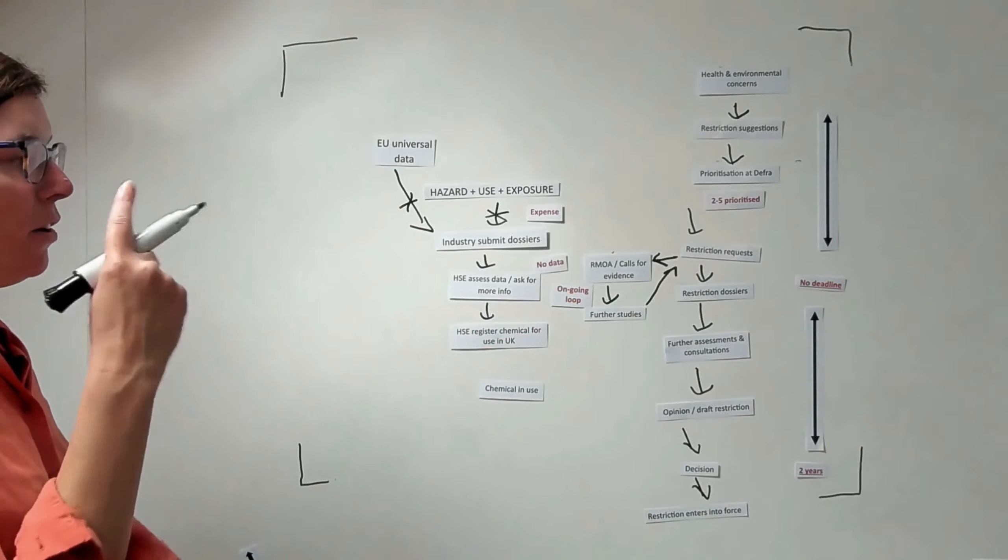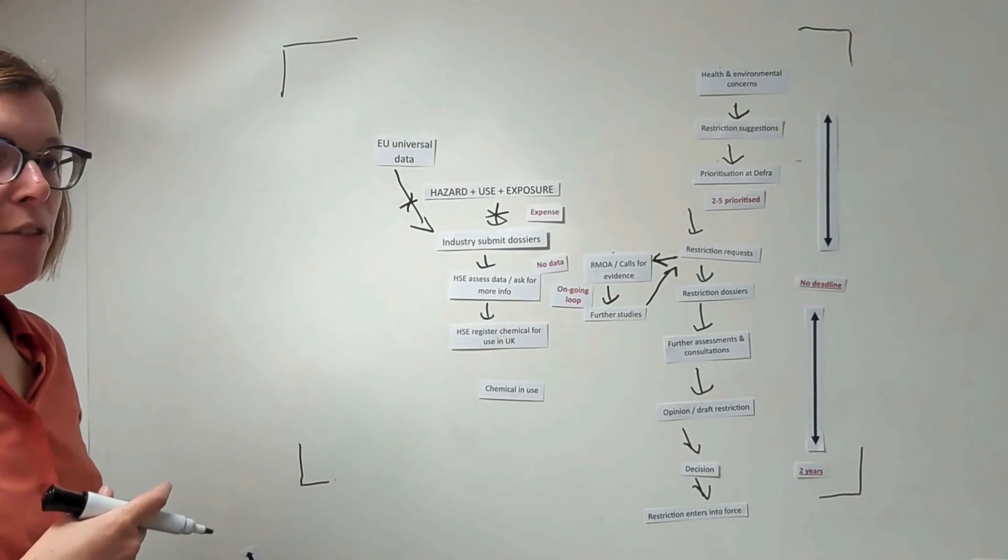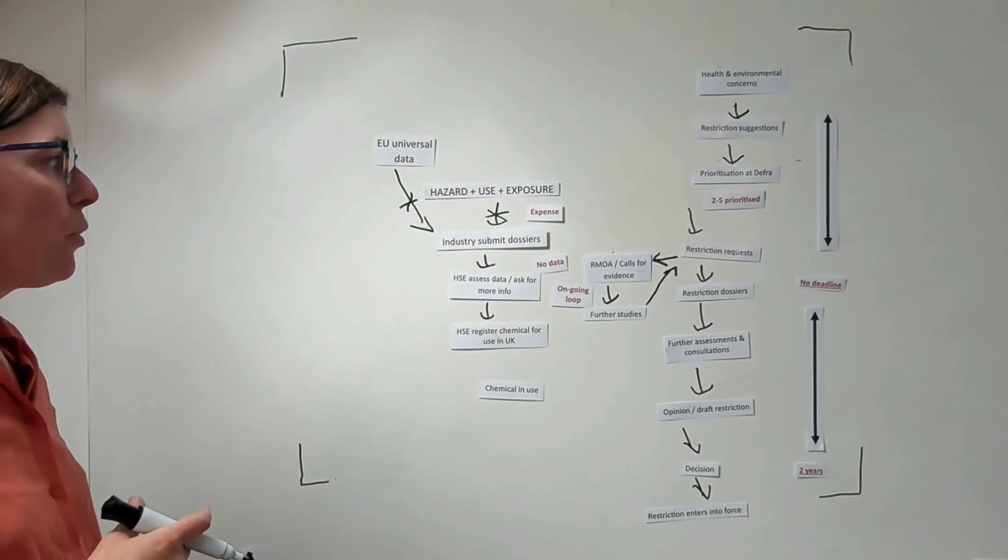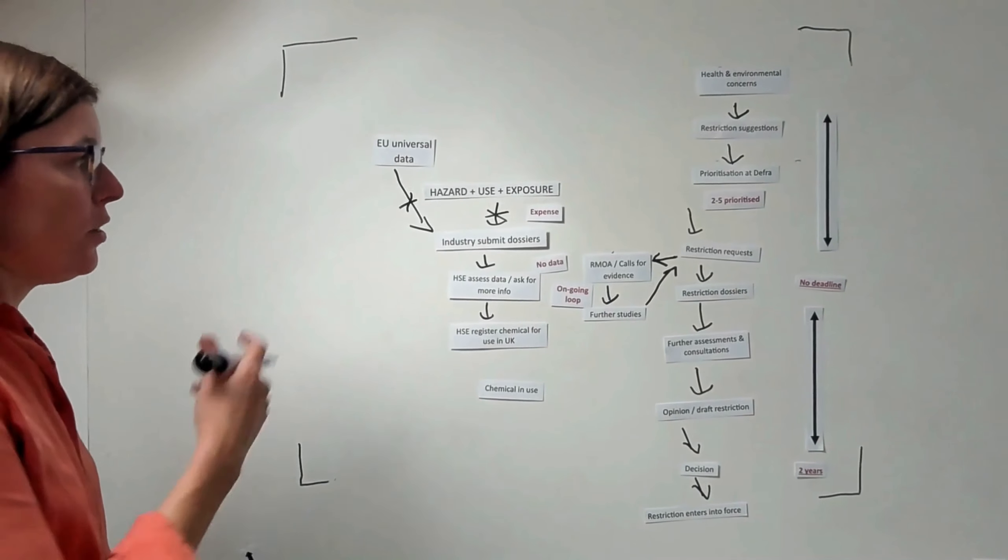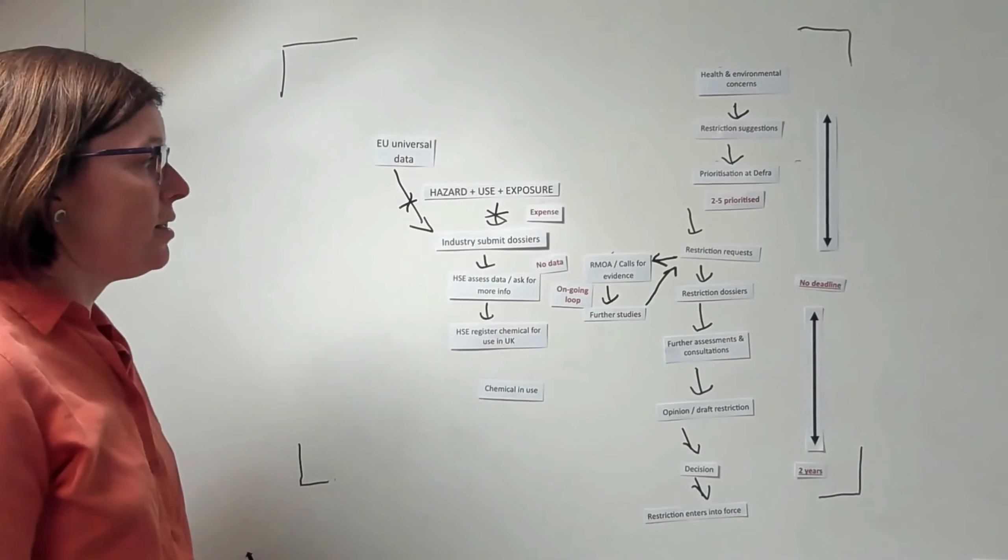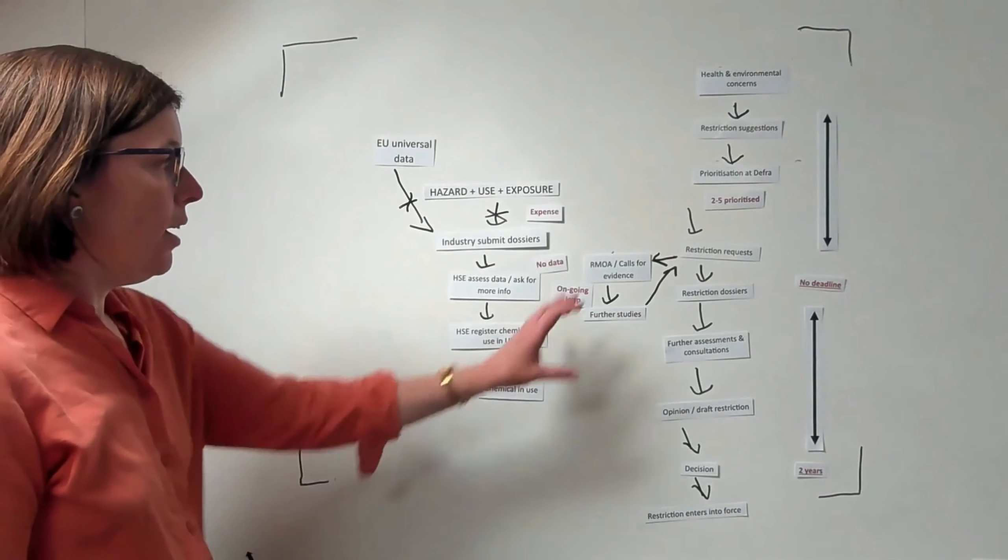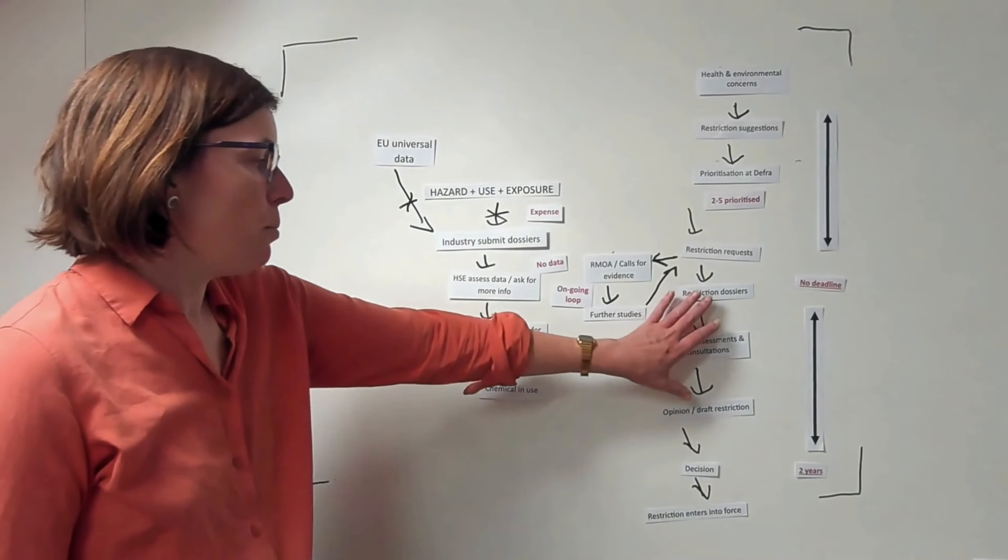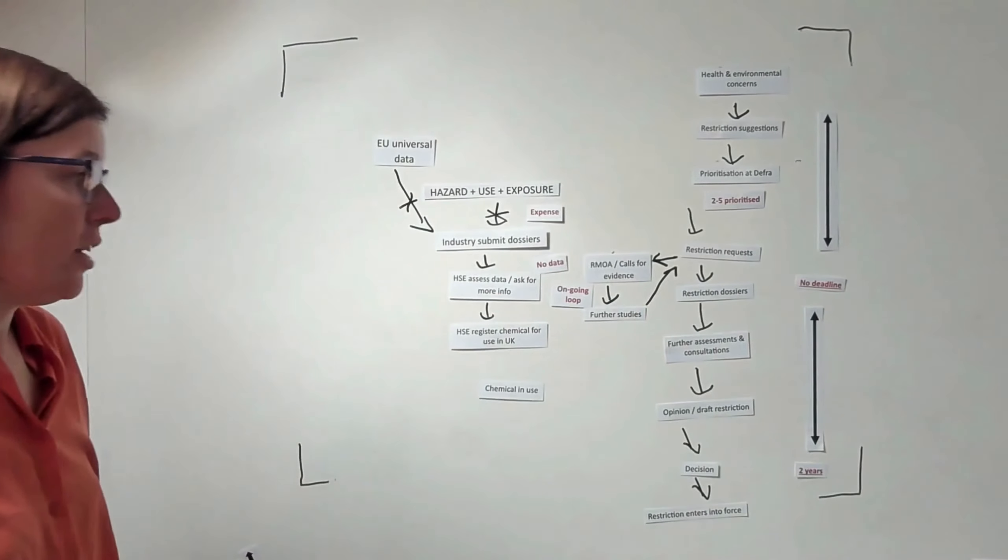That further study could then suggest that a restriction is drawn up. So we end up in this cycle where we have an ongoing loop of different calls for evidence, risk management options analysis, further studies. Sometimes further studies are also suggested at other stages, potentially meaning that we're never progressing to the stage where a restriction actually happens.